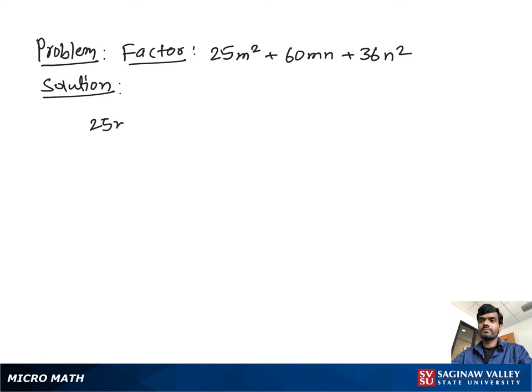Factor 25m² + 60mn + 36n². Now if we see the first and last terms, it looks like a perfect square.